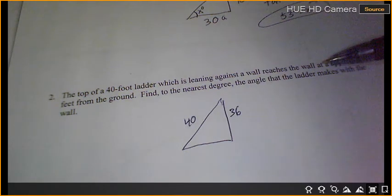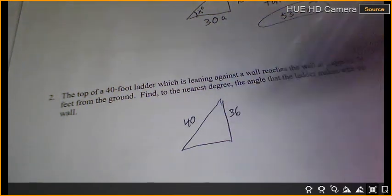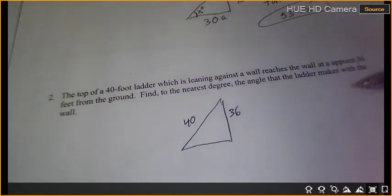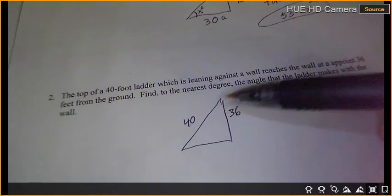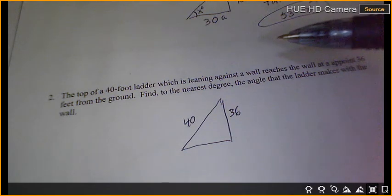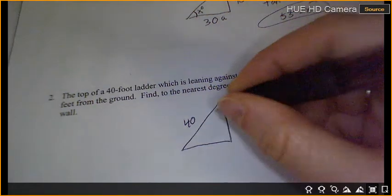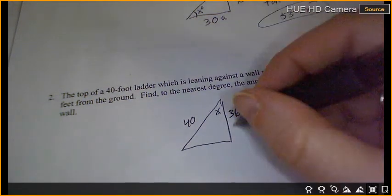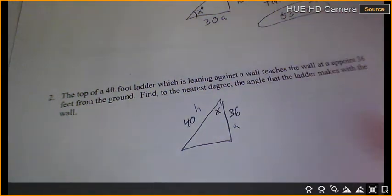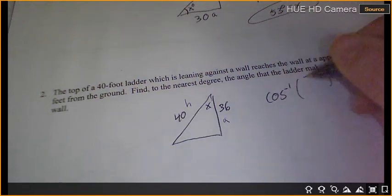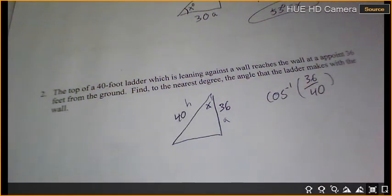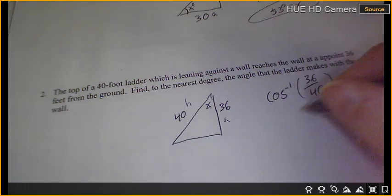Against a wall, reaches the wall at a point 36 feet from the ground. Find to the nearest degree the angle that the ladder makes with the wall. Is that on the bottom or the top? The top. The ladder makes with the wall. Is that on the bottom or the top? The top. The ladder and the wall. This is my adjacent. This is my hypotenuse. So I'm going to use cosine of negative 1 adjacent over hypotenuse. Put my calculator trig button. Cosine negative 1. 36 divided by 40. I get 26 degrees.